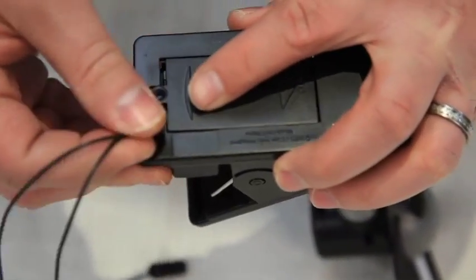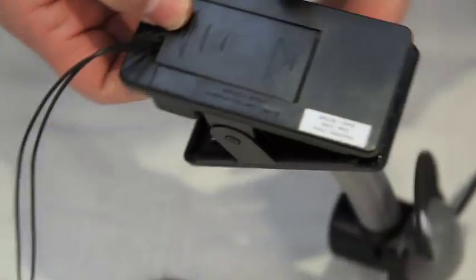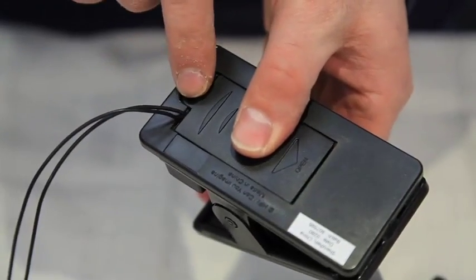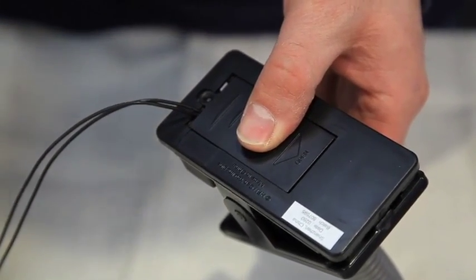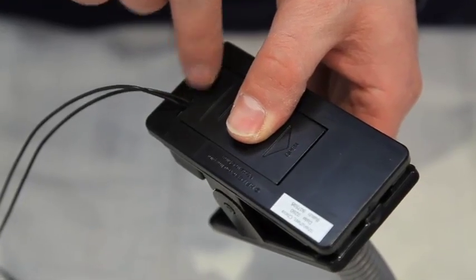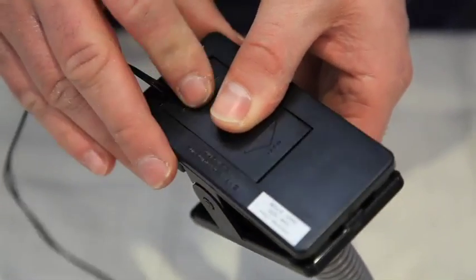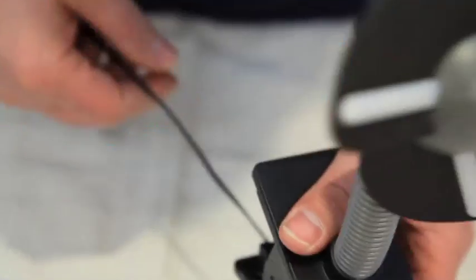So you close your battery compartment. Now on some devices and toys you may not be able to close the battery compartment. You want to test to make sure that your interrupter does work before you may have to cut a little notch or something to make the battery compartment close. But for our purposes right now it seems to be okay.